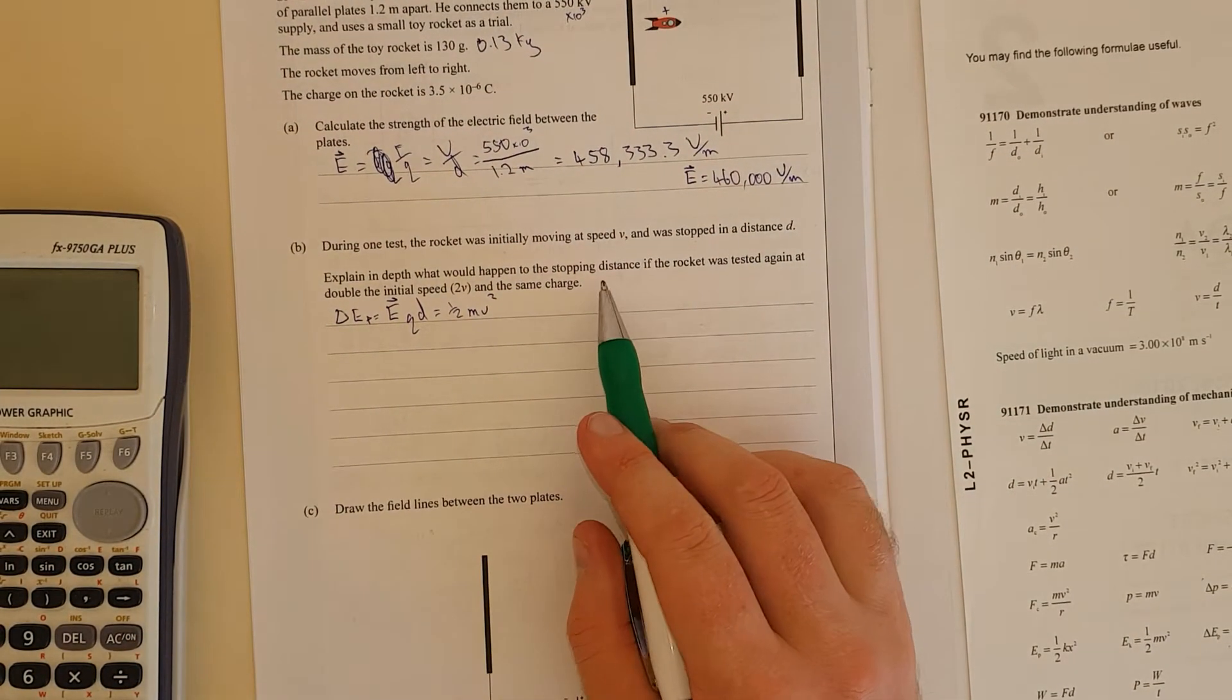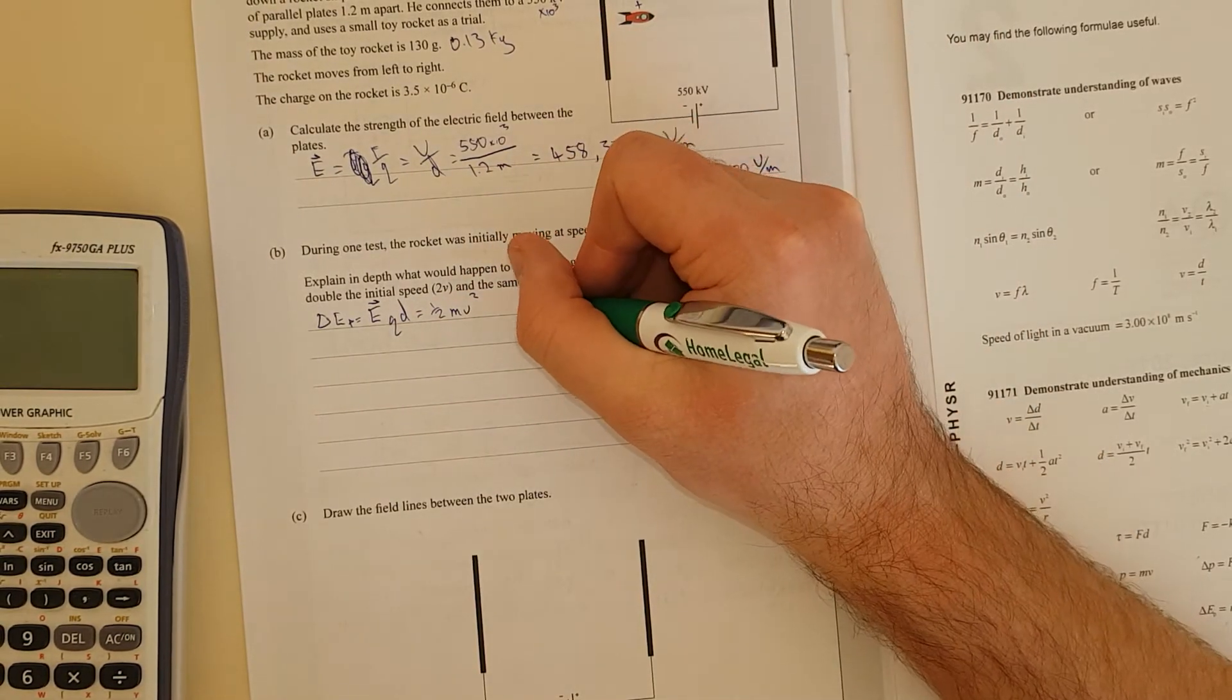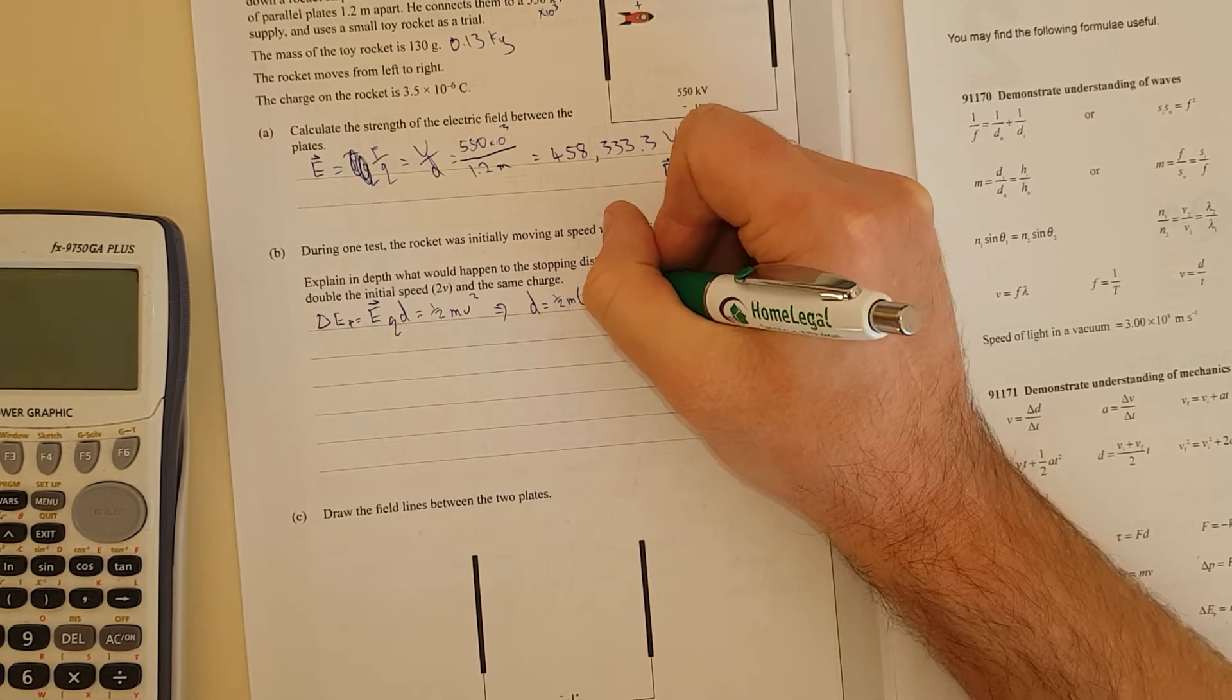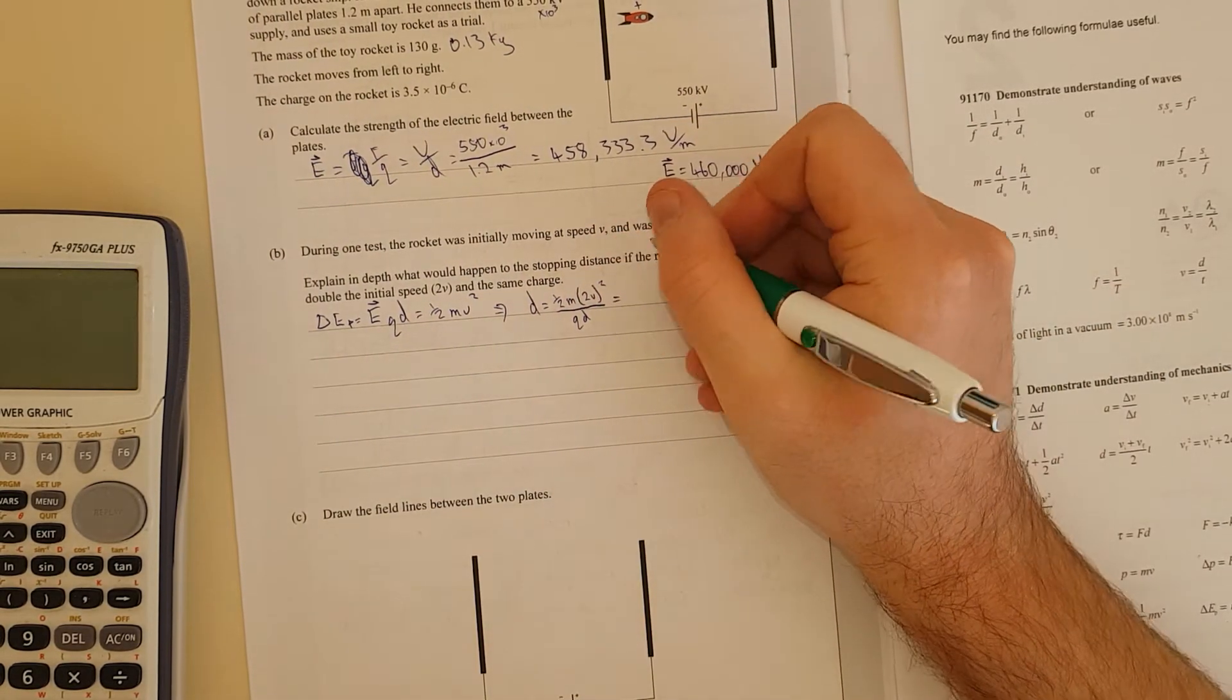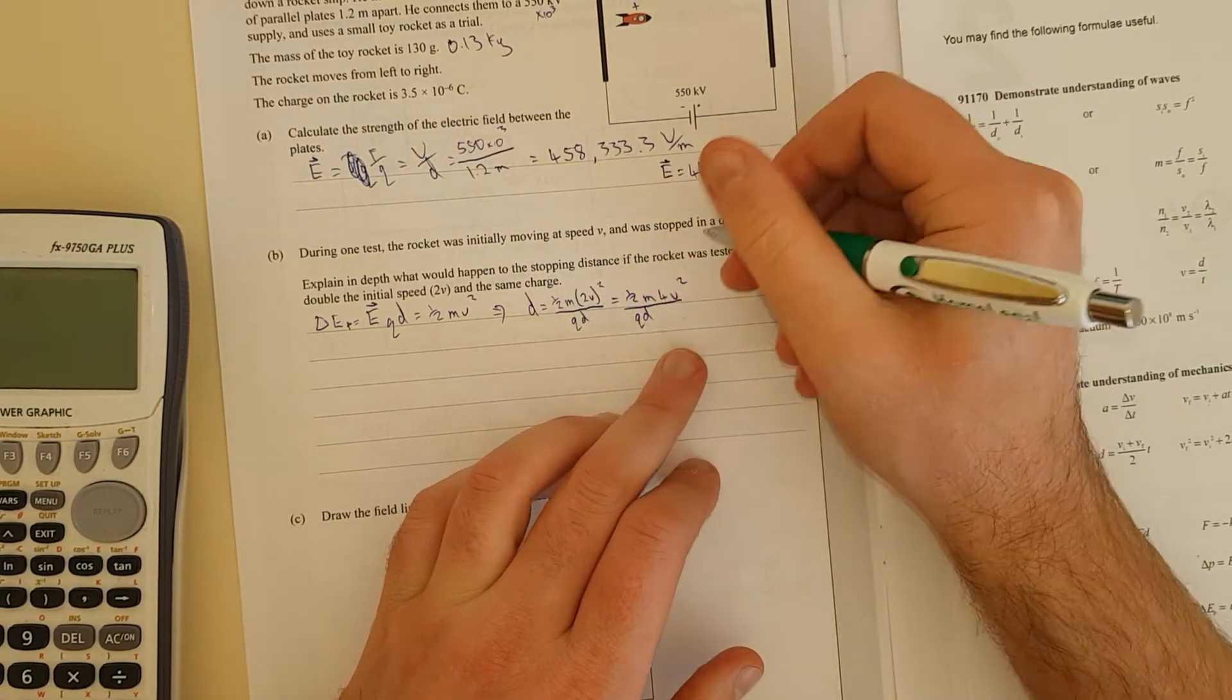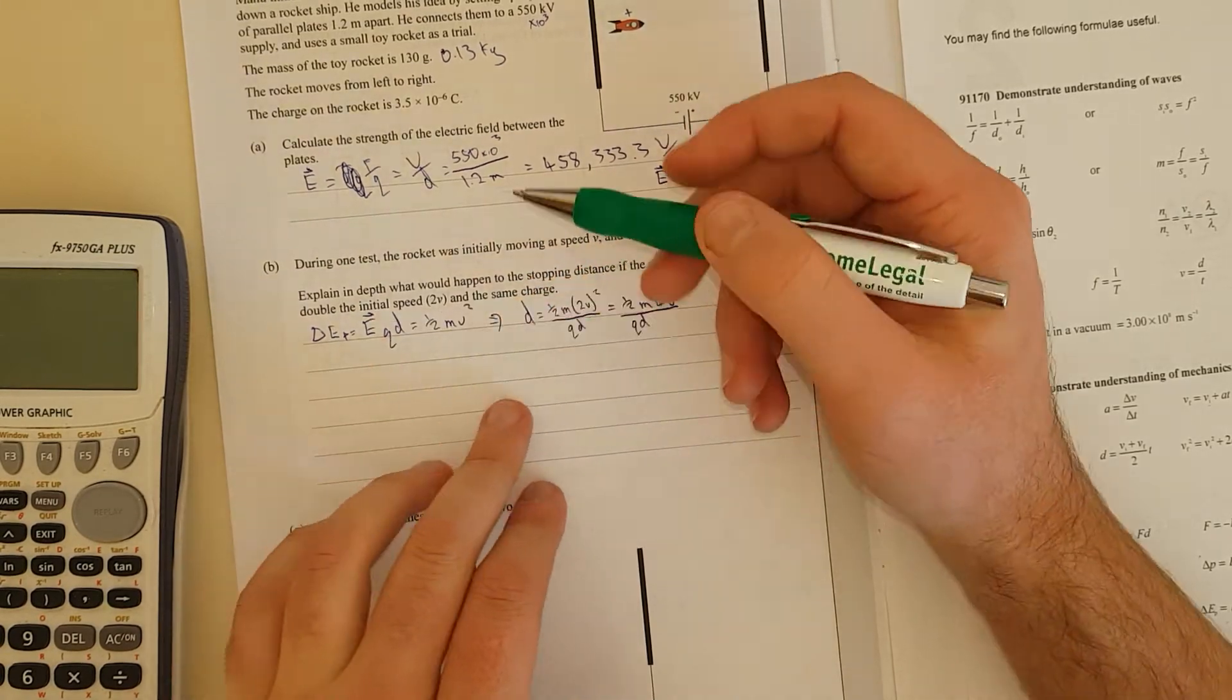What would happen to the stopping distance if the rocket was tested again at double the initial speed? So we're trying to rearrange for distance. So we'll divide both sides by E and Q. So distance equals half M, and now we're going to chuck the 2 in. So we have 2V squared over QE. And now you can see this is equal to half M times 4V squared over QE. And we can see it's going to go four times as far because originally it was just this equation.